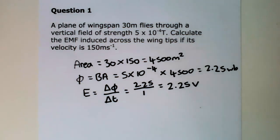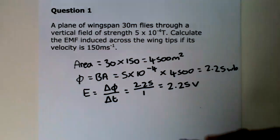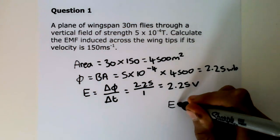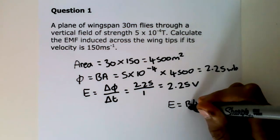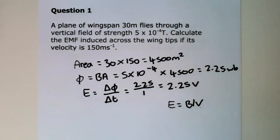This method leads us to a simple equation for the EMF induced by flux cutting. It is E equals BℓV, where B is the magnetic flux density in tesla, ℓ is the length of the conductor cutting the field in metres, and V is the speed at which the conductor cuts the field in metres per second.